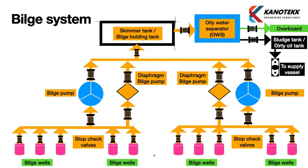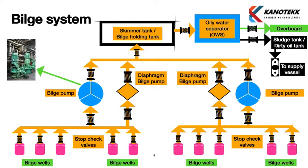In the bilge system, mud pump rooms and sack rooms present a special challenge: mud accumulates inside the bilge wells due to loose mud scattered in the rooms. To pump out this mud, a diaphragm bilge pump is used, which is an air-supplied bilge pump that can be portable or fixed type. Photos of the diaphragm bilge pump are shown here.